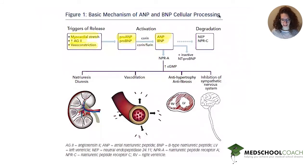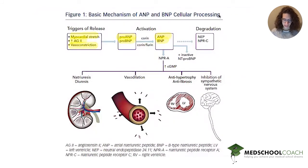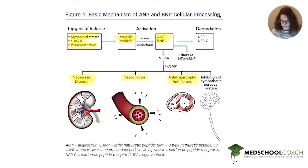It is also important to note that ANP is secreted by the atria and BNP is secreted by the ventricles. These natriuretic peptides bind their receptors and have a variety of effects: on the kidney, they promote natriuresis and diuresis; in the blood vessels, they promote vasodilation; in the heart itself, they are antihypertrophic and antifibrotic, preventing adverse remodeling; and in the CNS, they inhibit the sympathetic nervous system.